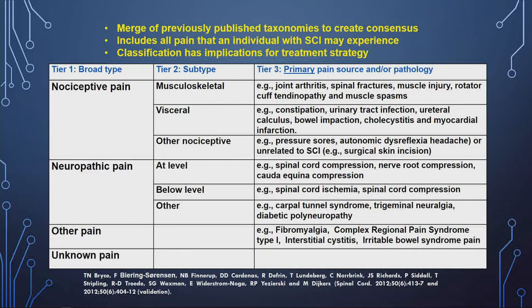There are two broad types: nociceptive and neuropathic pain. The other categories cover pains where we know the name but not necessarily the mechanisms — one example could be fibromyalgia. What's different about this classification compared to many others is that it includes all the pains that someone with spinal cord injury can have. When you go to a rehab doctor, you want to be able to get treatment for all your pains at the same time, and unfortunately people have many different types of pain. What we're focusing on today is at-level and below-level neuropathic pain, also called central neuropathic pain.